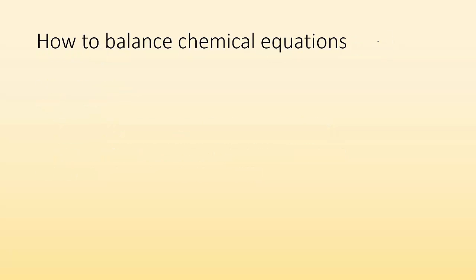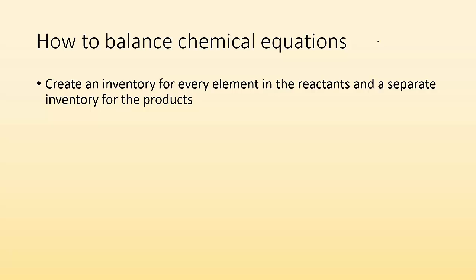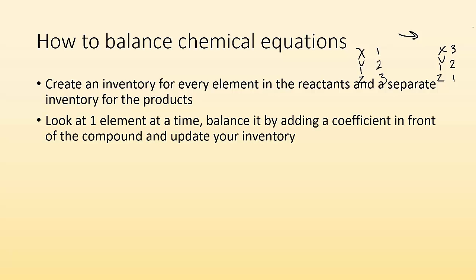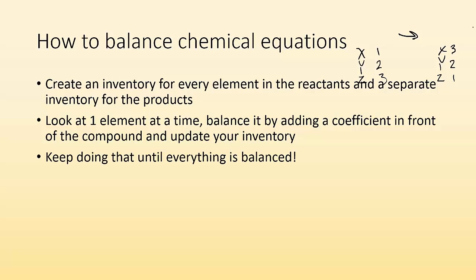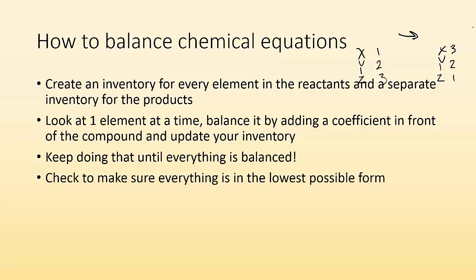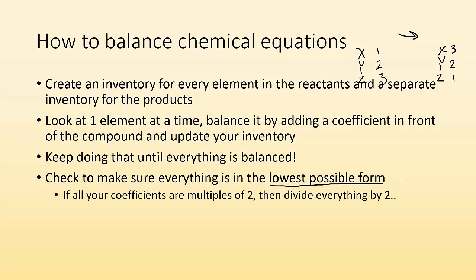How do we balance this equation? First, you're going to want to create an inventory for every element in the reactants and a separate inventory for the products. You put element X, Y, and Z, and count how many you have of each. Then you look on the products side and do the same thing. Then you look at one element at a time and balance it by adding a coefficient in front of the compound and update your inventory. Keep doing that until everything's balanced. When you're done, check to make sure everything is in the lowest possible form — if all your coefficients are multiples of two, divide by two. Put them into the simplest whole number ratio.